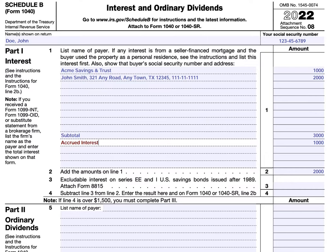For original issue discount, you follow similar rules as nominees and accrued interest. If you're reporting original issue discount less than what was shown on your 1099-OID — either in box 1, which is the original issue discount for the year, or box 8, which is the original issue discount on U.S. Treasury obligations — you would report it and then write 'OID adjustment' instead. And if you had amortizable bond premium, you would do the same thing, except you would write 'ABP adjustment' for amortizable bond premium.